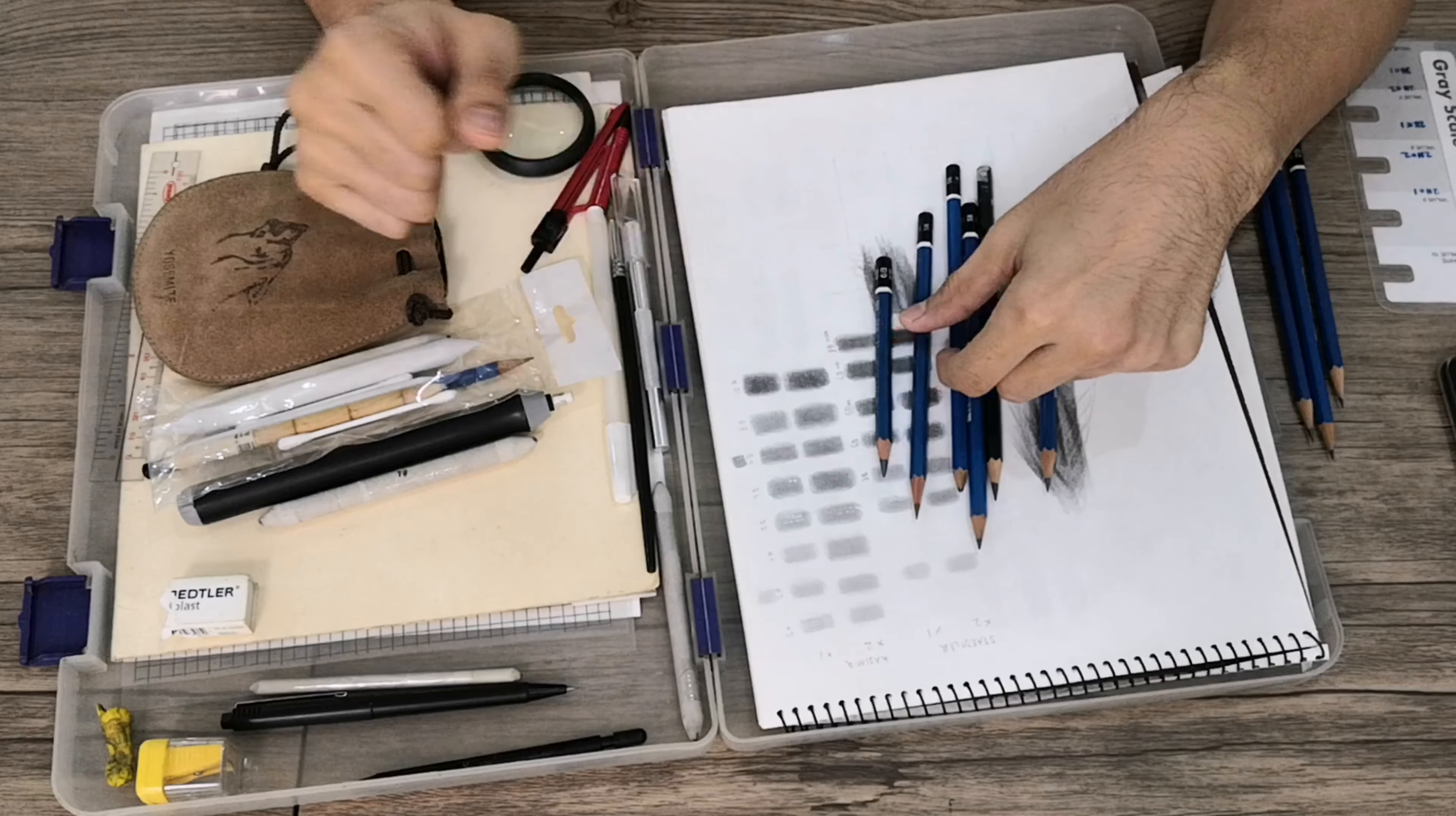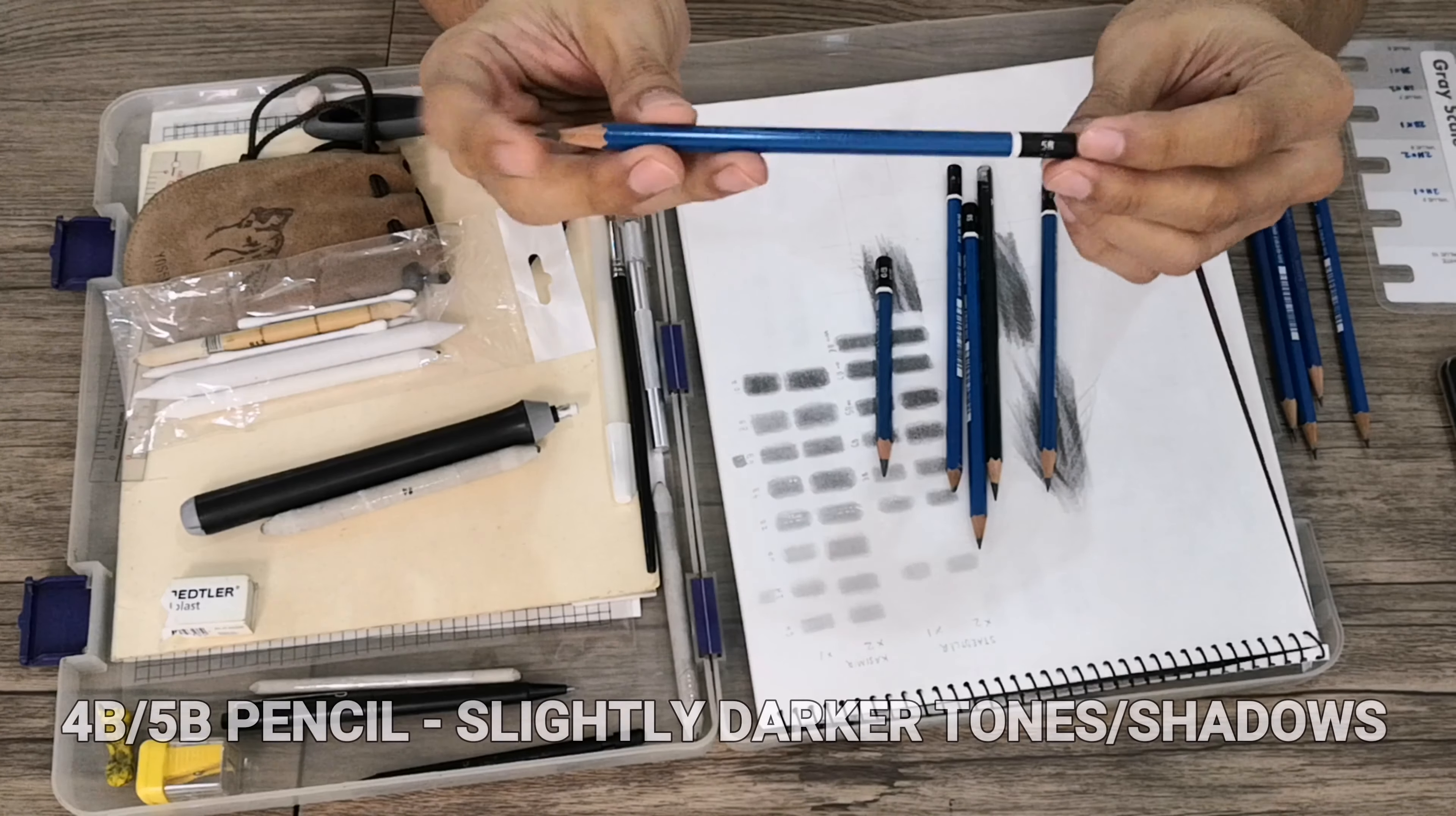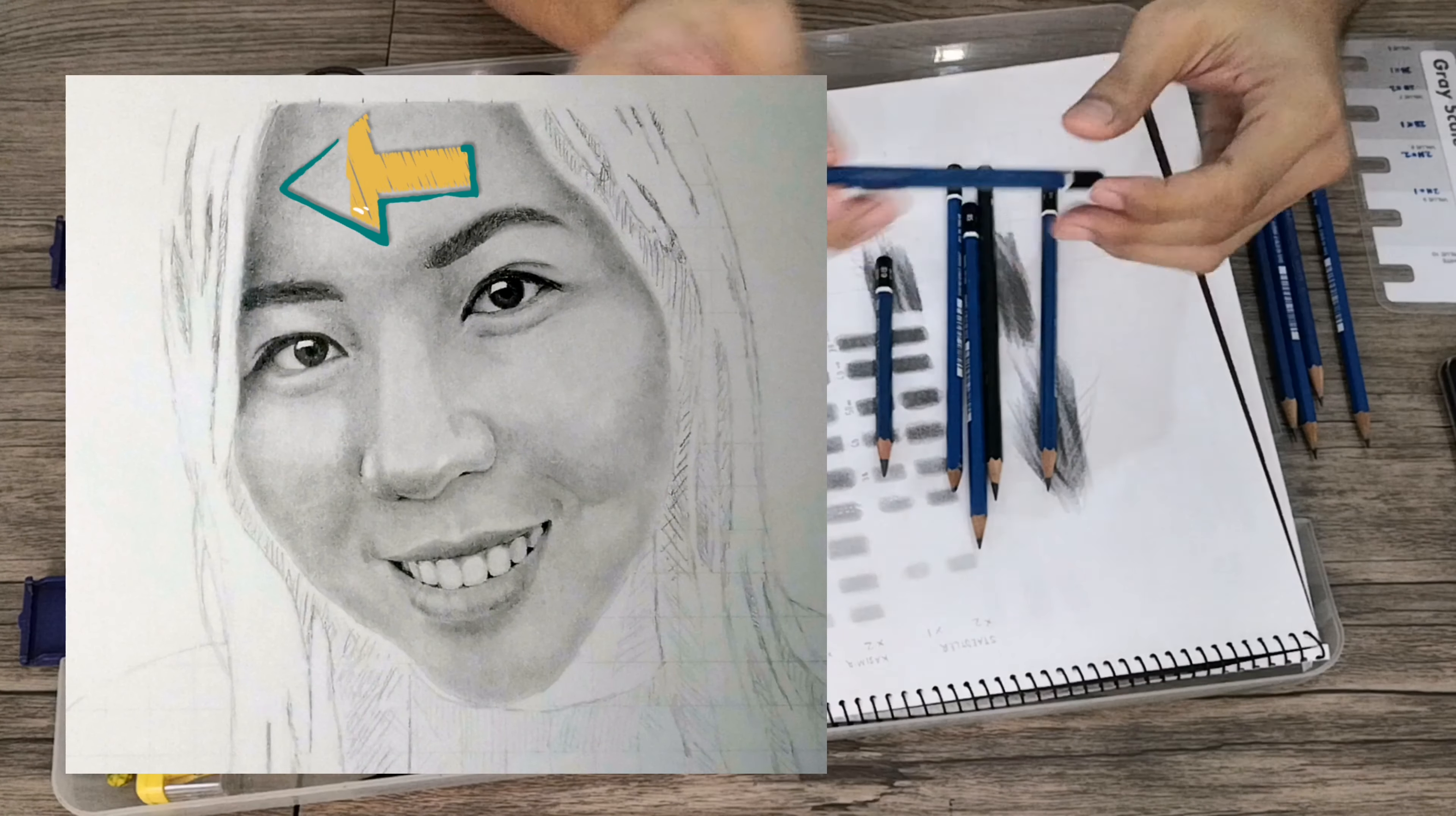I also have here a 5B, but still you can use 4B instead of 5B. I use this for more darker tones.